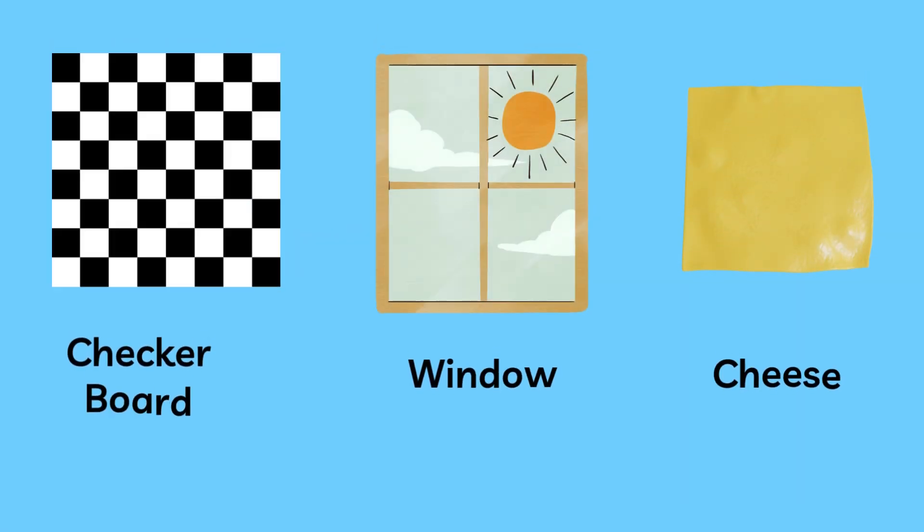This is a square. It has four equal sides and four corners. You can find squares all around you. Look at the checkerboard, a window, or even a slice of cheese.